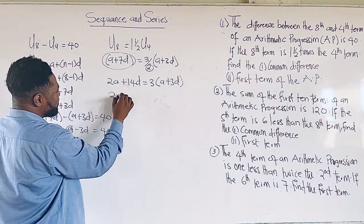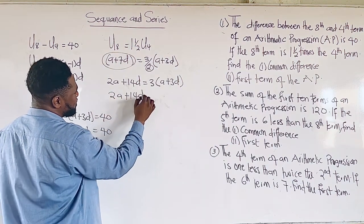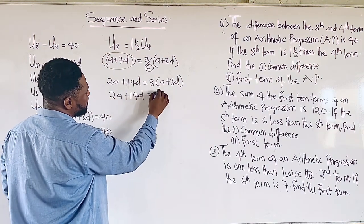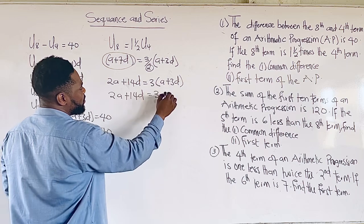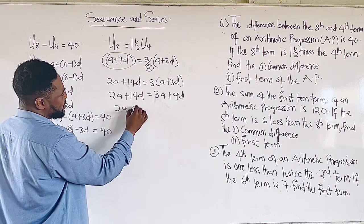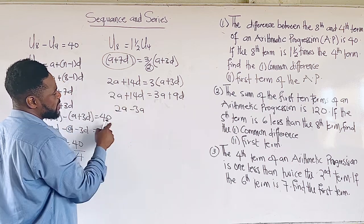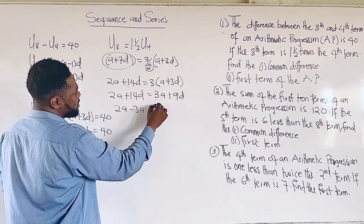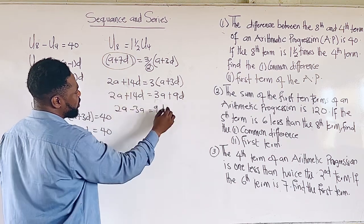So we simplify this, which gives us 3A + 9D. We group all the A at one side. So we send this to this side, we maintain this 9D, we send the 14D.